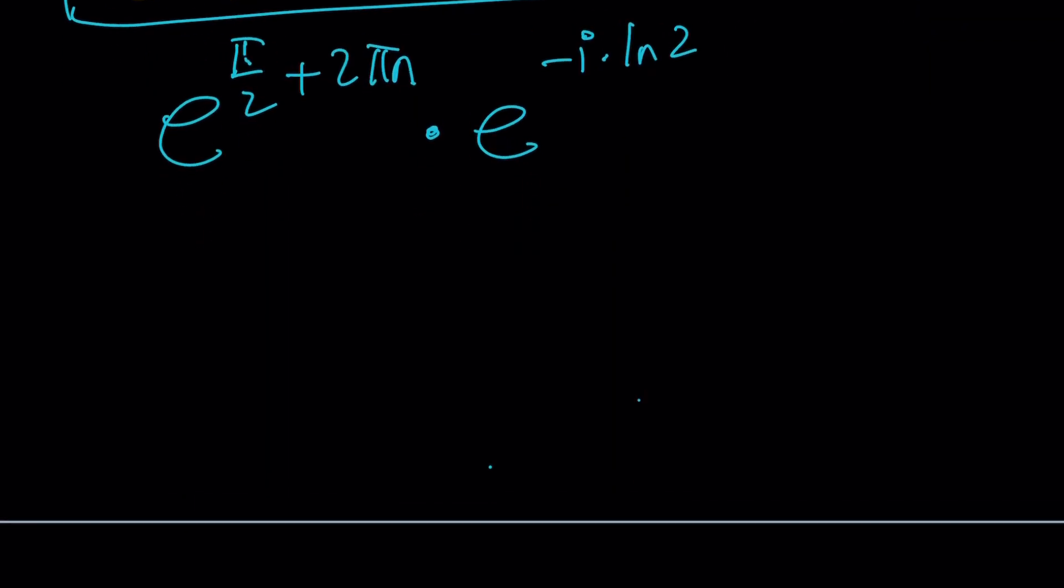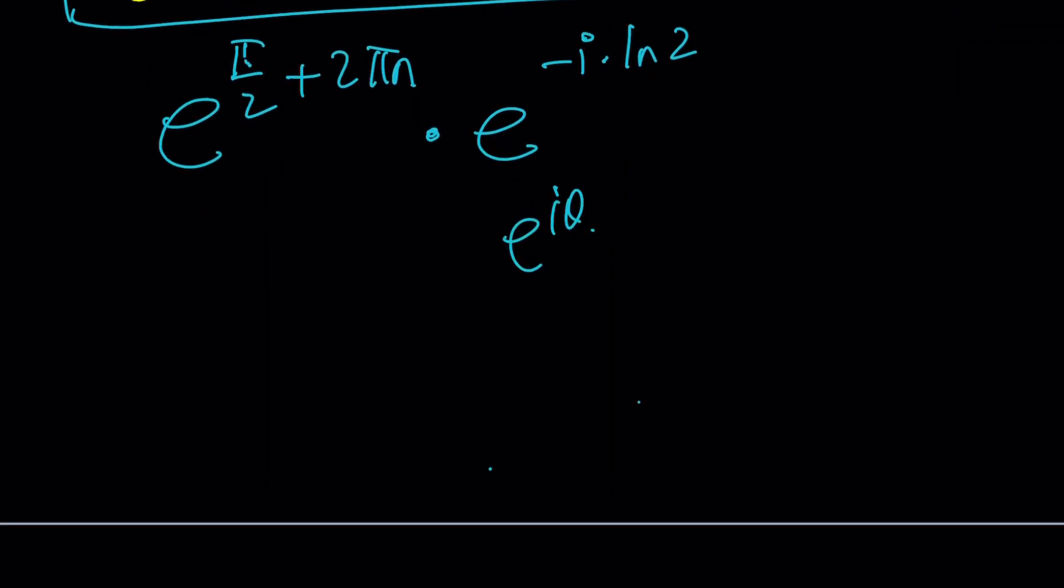So one thing you need to remember, E to the I theta is cosine theta plus I sine theta. In this case, theta happens to be negative LN2. And theta is negative because of the minus sign. It's just a reciprocal, but it just negates the answer and you get the reflection. Anyways, this is my modulus R.